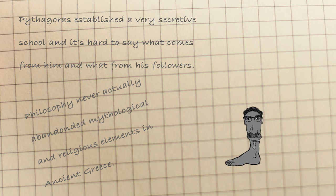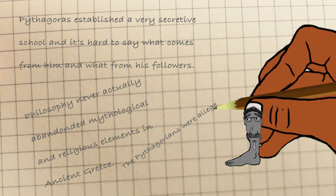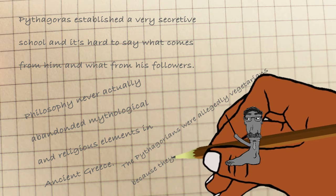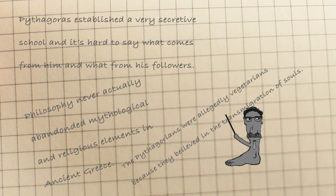They also had rules that resemble those that exist in religious sects. For example, they were vegetarians because they believed in reincarnation. All living souls were equal and after death, a soul that was in a human body could go to an animal body and the other way around.